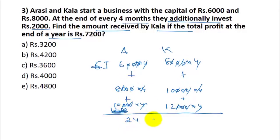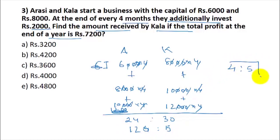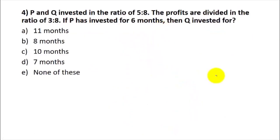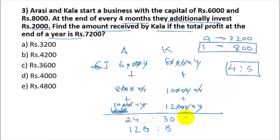For Arisa: 6+8+10 = 24 (in thousands), and for Kala: 8+10+12 = 30 (in thousands), simplifying to a ratio of 4:5. The sum 9 parts equals ₹7,200, so 1 part = ₹800. Kala's share is 5 × ₹800 = ₹4,000. The answer is option B.